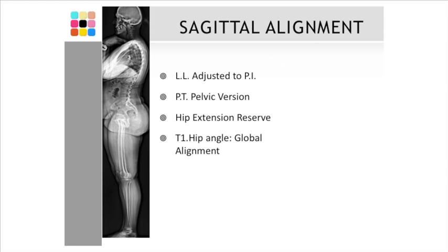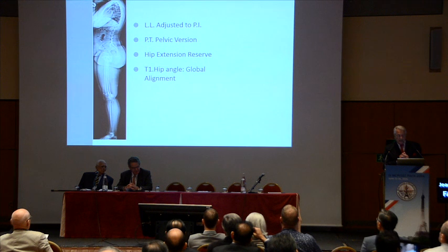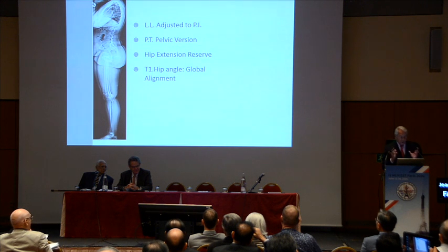And simultaneously, we have the sagittal alignment, which is interesting because every individual has a different type of lordosis, LL, and a different type of pelvic version.